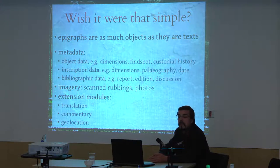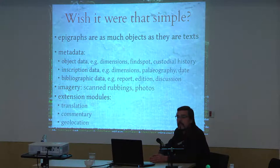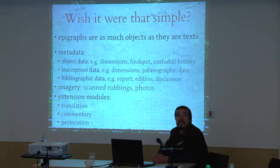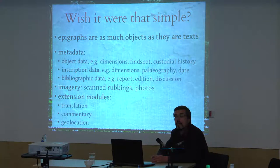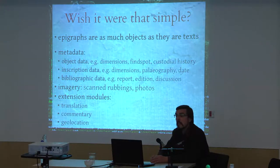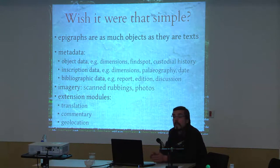We've got metadata. They include data about the object bearing the inscription, such as how big it is, where it was found, what museum it is kept in. There are also physical data about the inscription, such as what size the inscribed area is and what its characters look like. We've got internal metadata such as what date it was composed, and we've also got bibliographic data — where the inscription was first reported, who has edited it, where it was published, and major articles and books discussing the inscription.